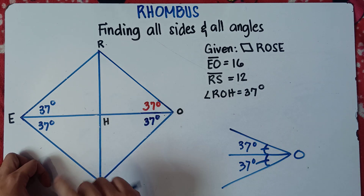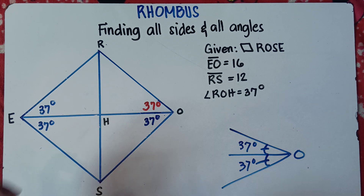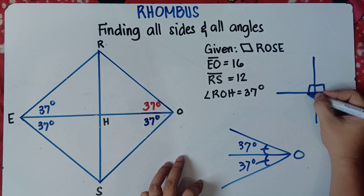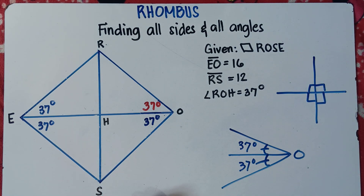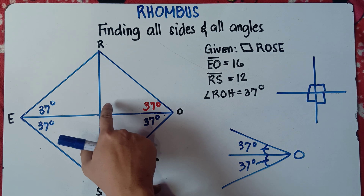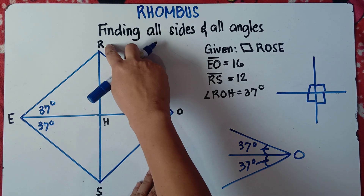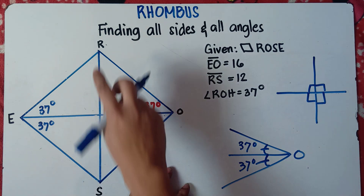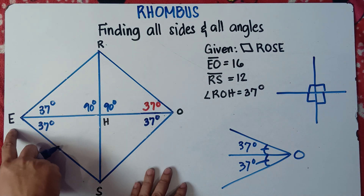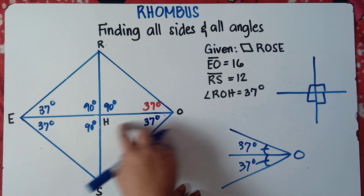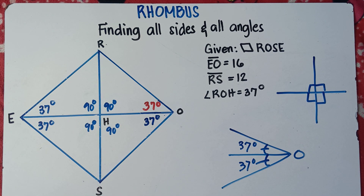This angle right here is 90 degrees. This angle right here is 90 degrees. This one is 90 and this one is 90. When two lines cross each other and form 90-degree angles, we call them perpendicular lines. So diagonals of a rhombus are perpendicular. Therefore, angle RHO, angle RHE, angle EHS, and angle SHO are all 90 degrees.